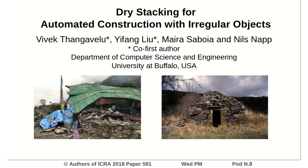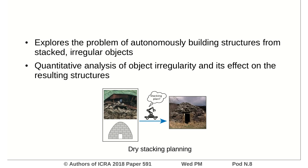Building support structures such as shelter, levees, or walls with found objects is important to humans. In disaster or remote areas, this type of construction might be the only viable choice, but currently such structures need to be built by skilled workers. In this paper, we specifically study autonomy for dry stacking, such as building without mortar. We also quantitatively analyze object irregularity and its effect on the resulting structures.